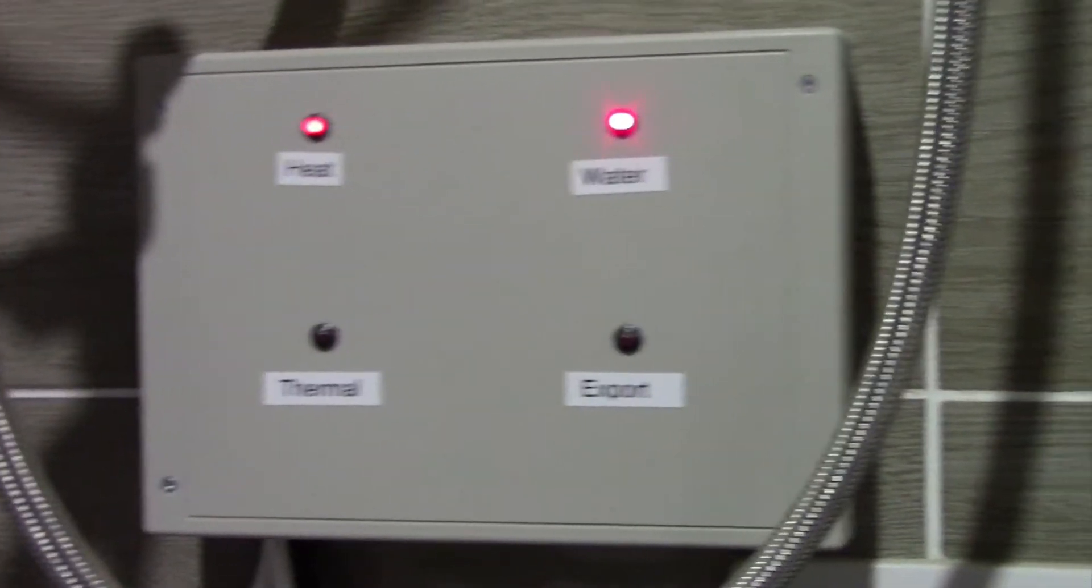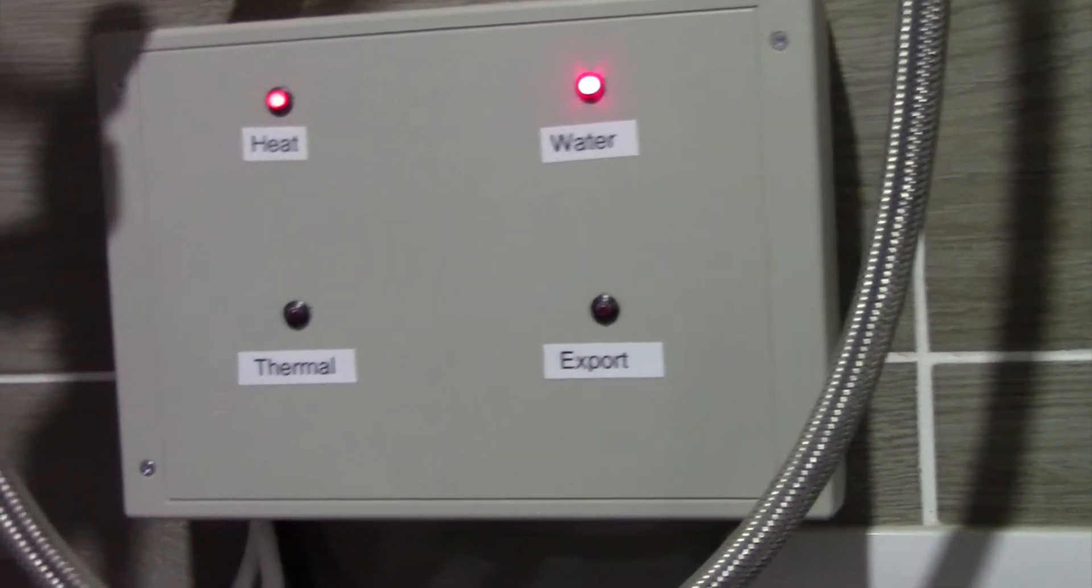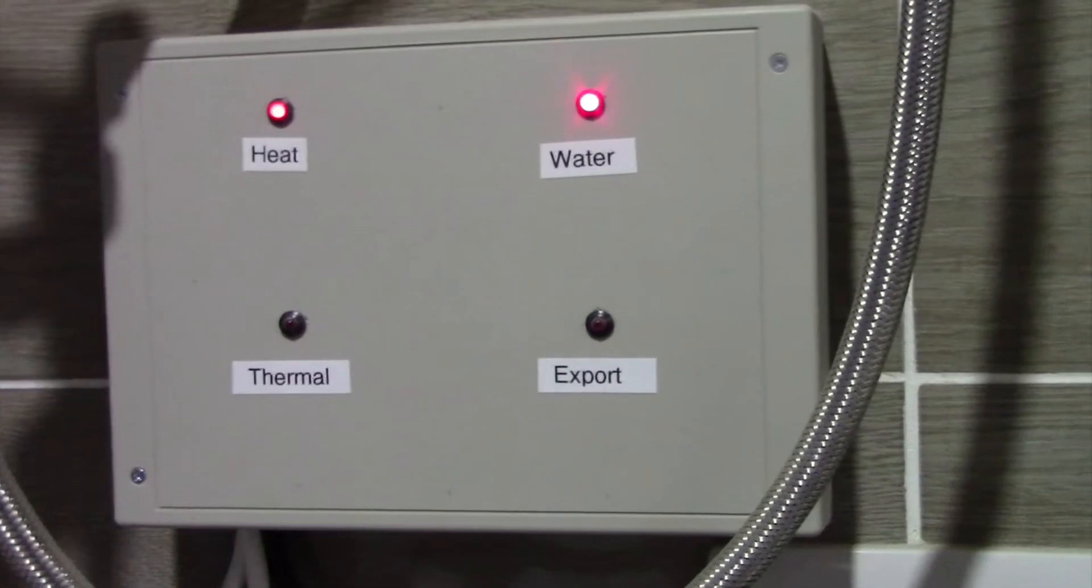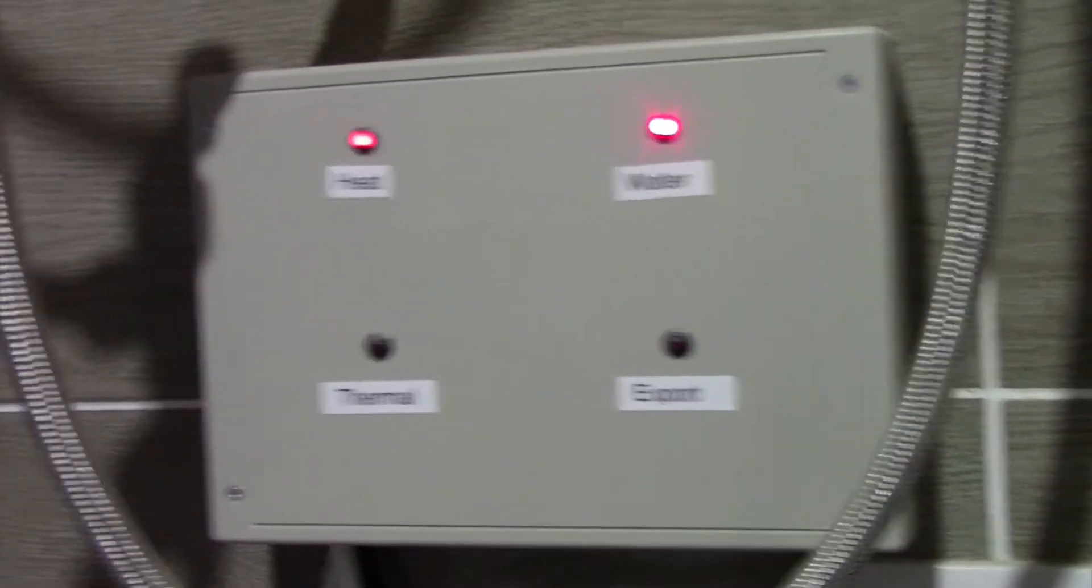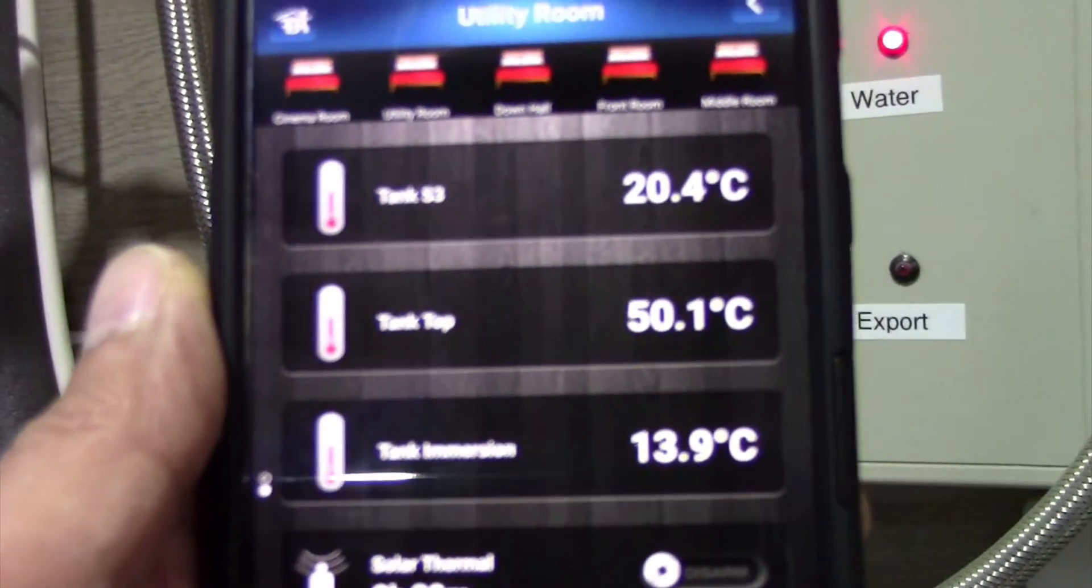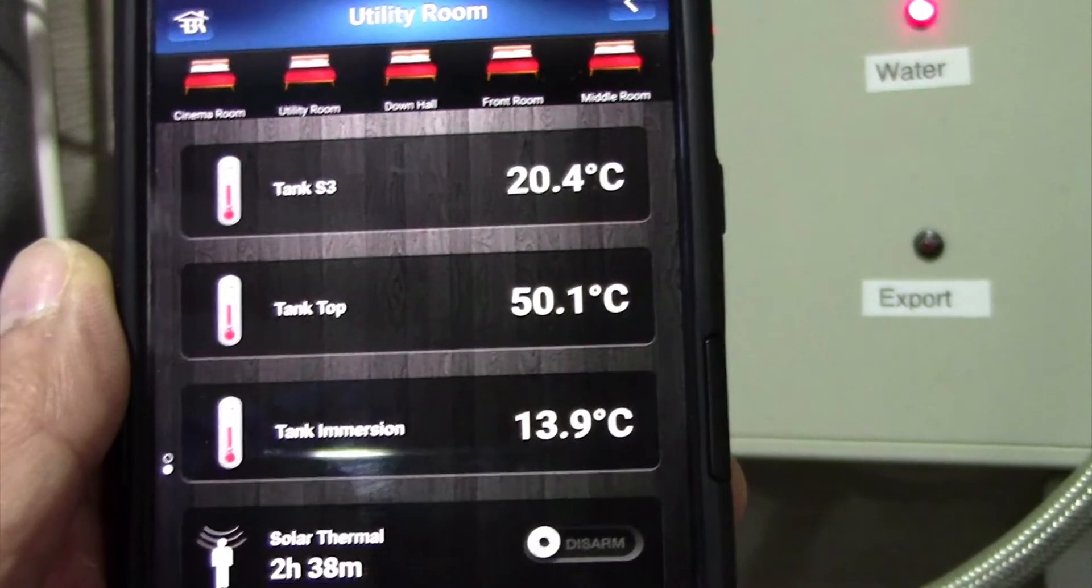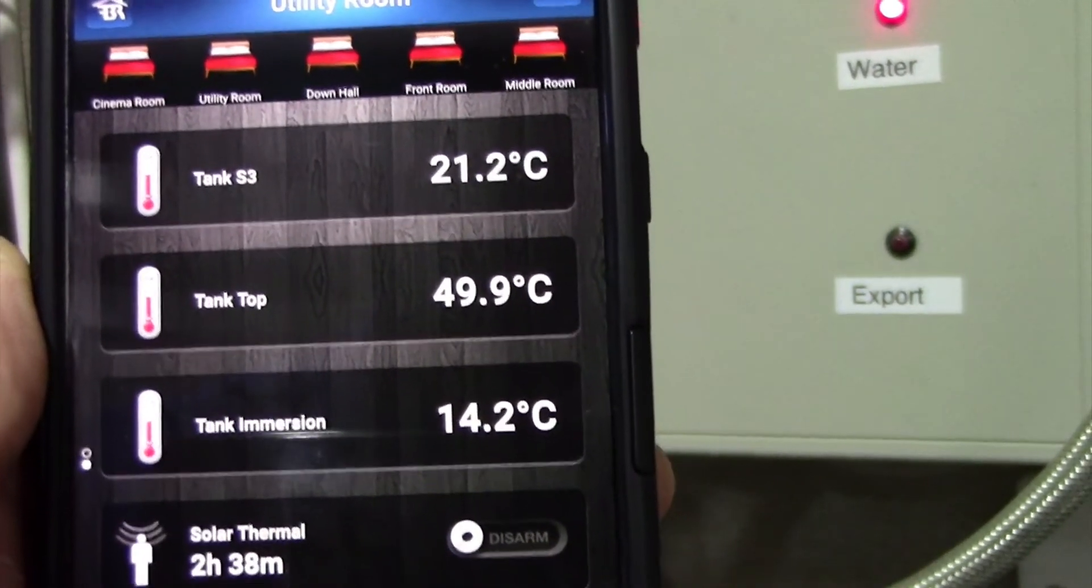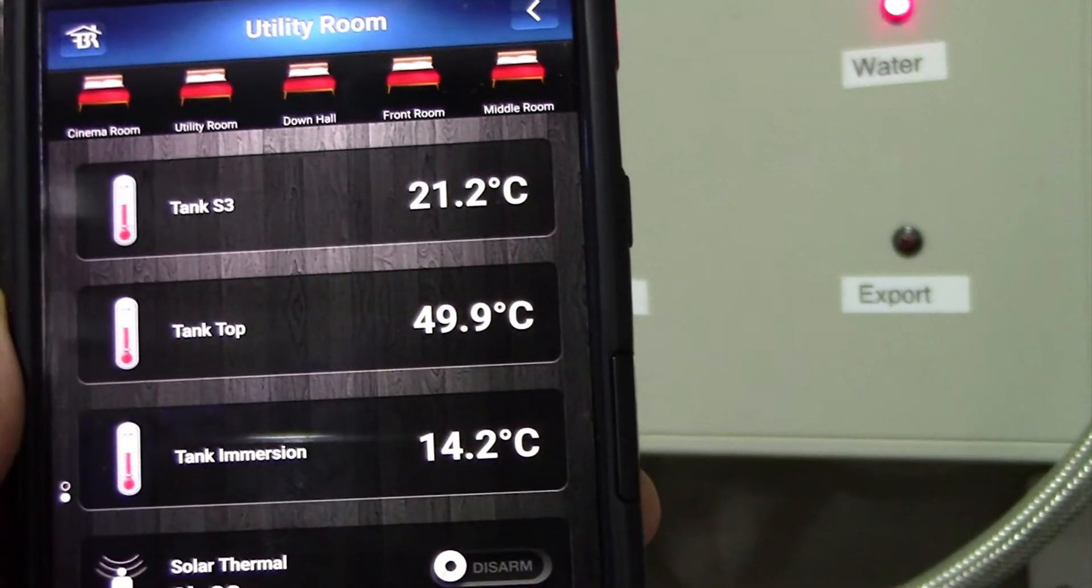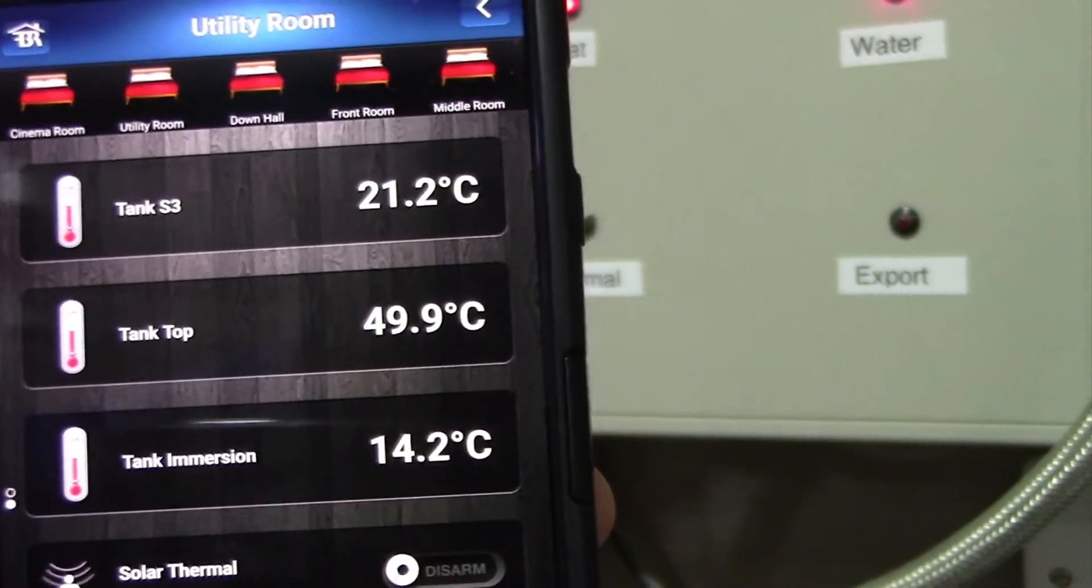The tanks aren't designed to have sensors inside them, so I attach them to the pipework. On my phone, all temperature measurements are displayed. As you can see, we've got tank S3, tank top, and tank immersion - those are exactly where the sensors are located, reference points on the tank.